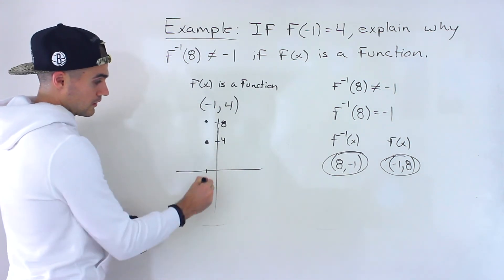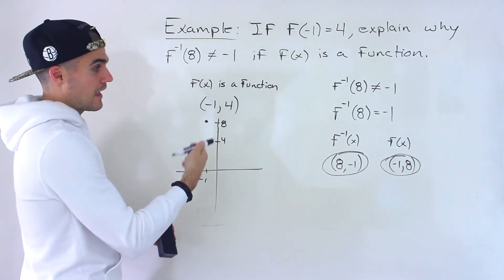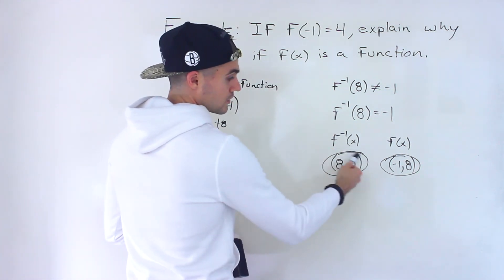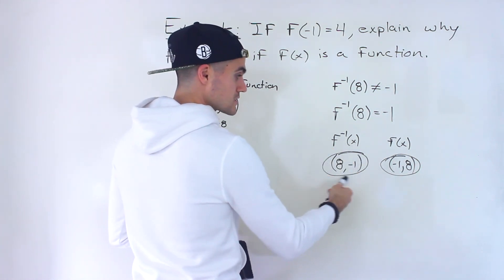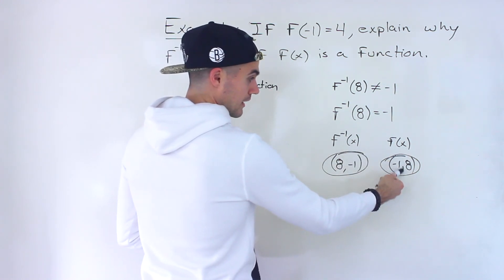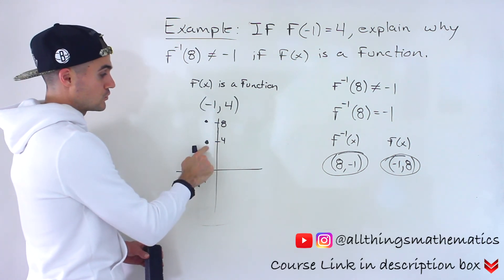So there's no other coordinate over here that can happen because it would fail the vertical line test, and that's why the inverse can't have this coordinate—because if the inverse had this coordinate then the function would have this coordinate, and then at that x value of negative 1 we would have a y value other than 4.